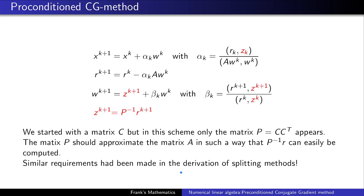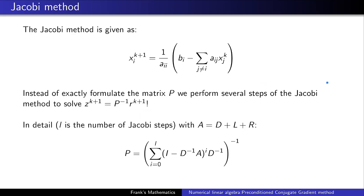Thinking about the easiest splitting method, the Jacobi method should come to mind. The idea is, instead of explicitly formulating the matrix P, we simply perform several steps of the Jacobi method. If you want to perform L steps of the Jacobi method, you can write down the corresponding matrix — with the splitting of A into a diagonal part, lower part, and upper part. But of course, you will never compute this matrix explicitly; you apply the Jacobi method in vector form.